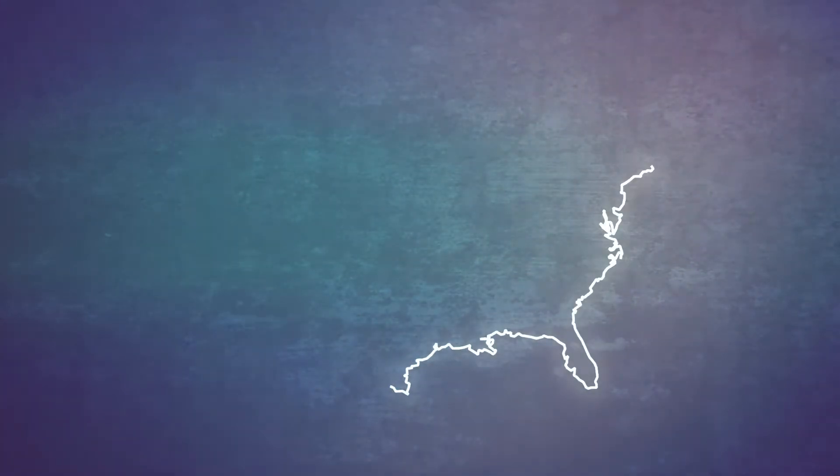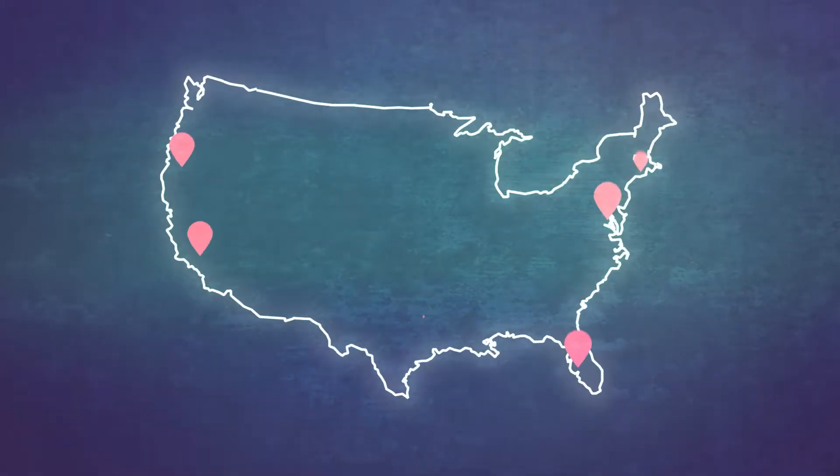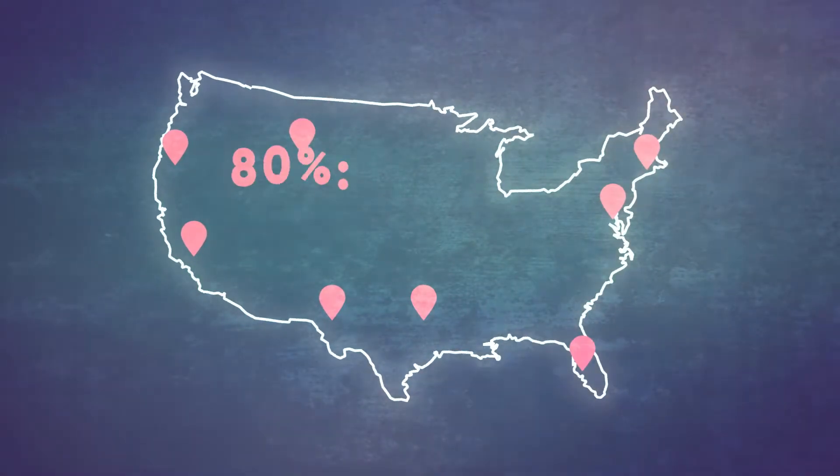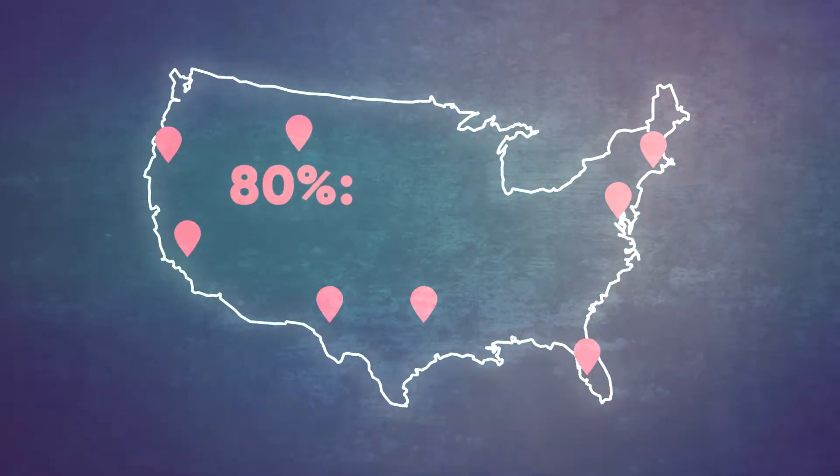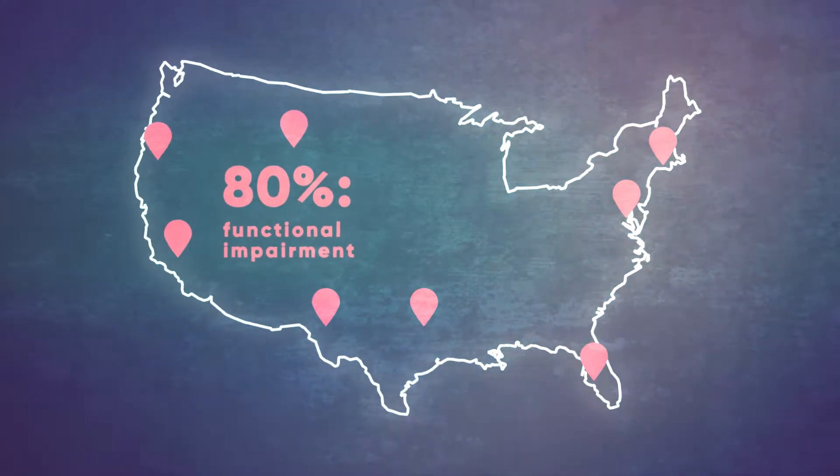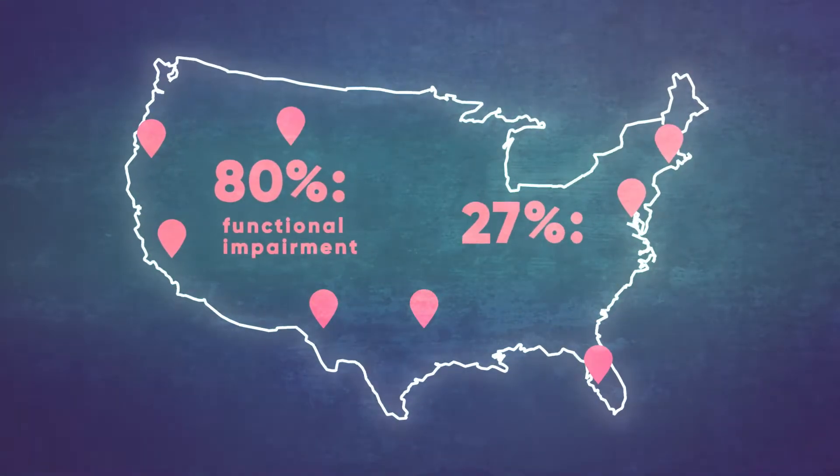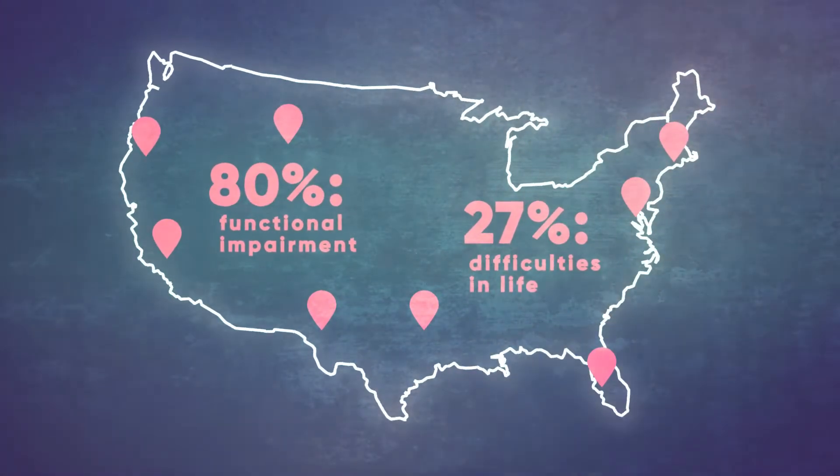In the US, the Centers for Disease Control and Prevention say that around 80% of people with depression report some level of functional impairment due to their condition, and 27% report serious difficulties in work and home life.